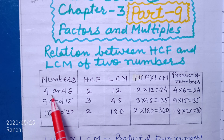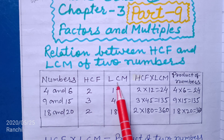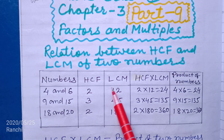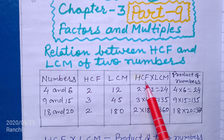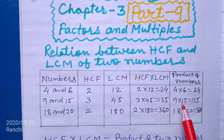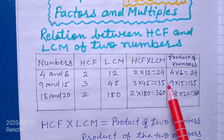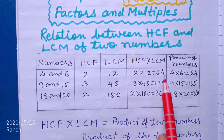Consider the numbers, their HCF and their LCM, and the product of LCM and product of numbers. There are 5 columns.